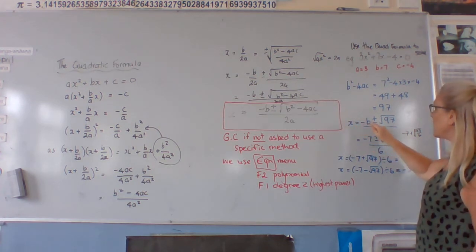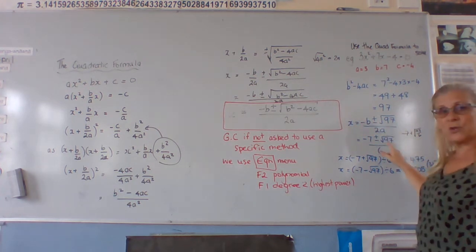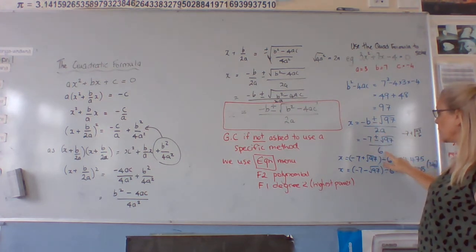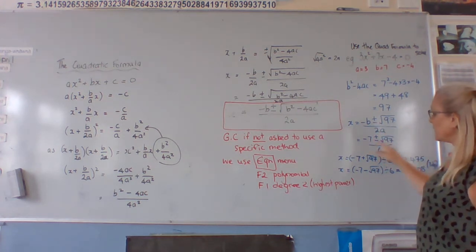So in that bit there, negative b plus or minus square root of 97 over 2a. b is 7, a is 3, so 2 threes is 6.